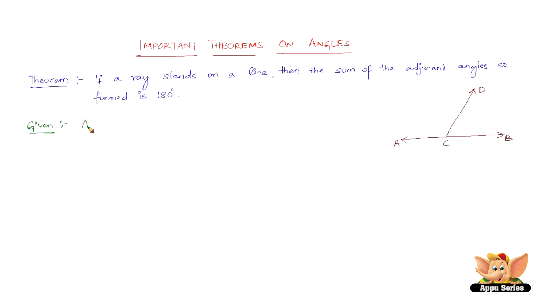Now we have given a ray CD which stands on the line AB such that angle ACD and angle BCD are formed. Let us quickly go to the figure here. This is the line AB. We have a ray CD on the line AB. So now, since CD is on the line AB, we have two angles being formed here.